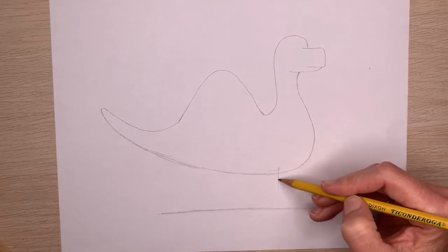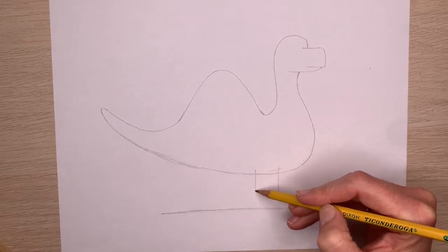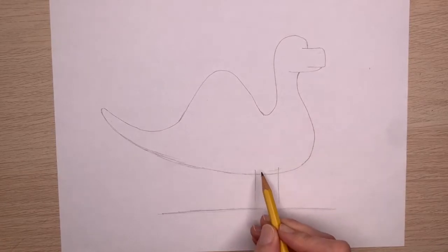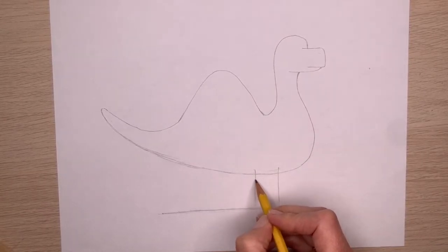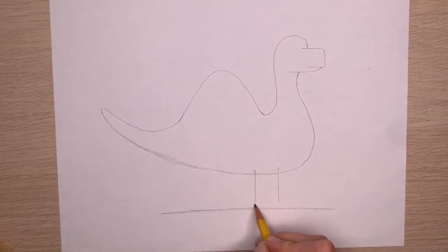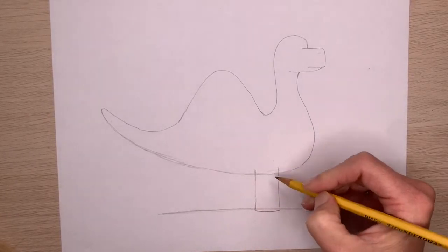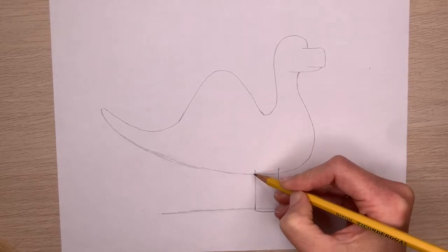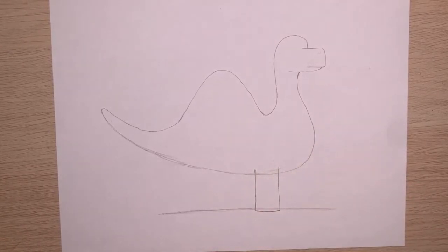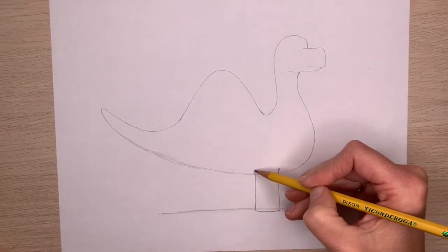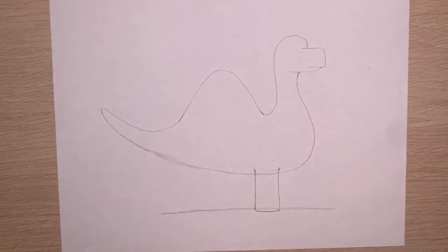And draw two lines that are fairly thick, fairly wide. You want nice wide legs to support this heavy dinosaur. And they're going to go all the way down to the ground and then connect. They can be a little lower than the ground too to make it look like it's standing on the ground. That'd be fine.